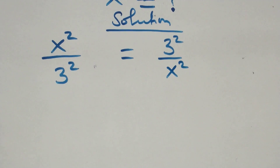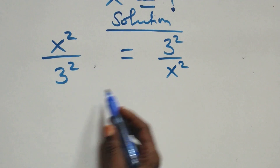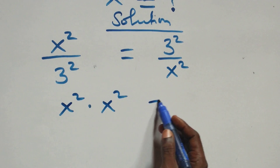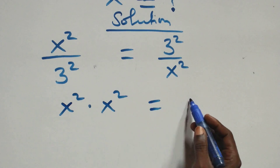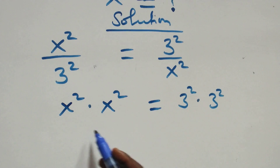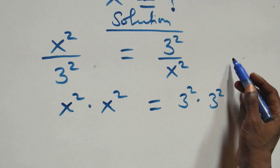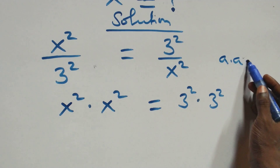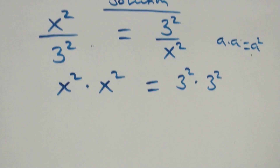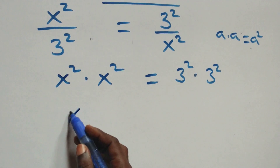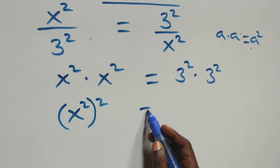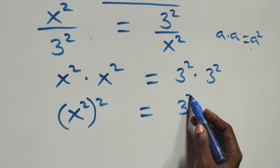The next step is to cross multiply: x squared times x squared equals three squared times three squared. This follows from the rule that when we have the same thing multiplying — that is, a times a — we can write it as a squared. So this implies we can write it as x squared squared equals three squared squared.